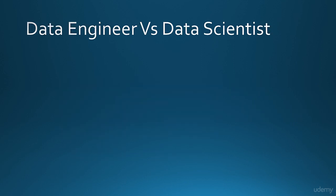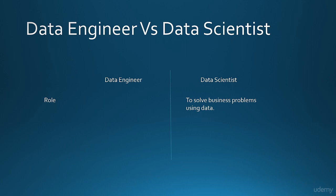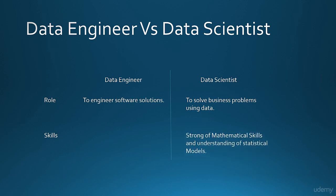That brings us to the next interesting comparison of the roles of data scientists and data engineers. This is a common thing which many people get confused with. In the ideal world, data scientists are generally the people who understand the various statistical models and can find out ways how a problem can be solved using the data around. On the other hand, data engineers are the people who implement the ideas of data scientists to create the technical architecture which would be a technical implementation of the solution. Skills required for data scientists would be good mathematical knowledge and a greater understanding about statistical models with a little programming skill. Skills expected from a data engineer would be strong technical knowledge, programming skills, and ability to formulate technical solutions.